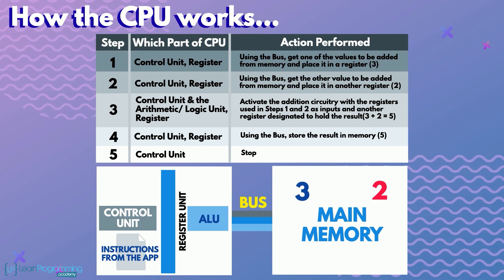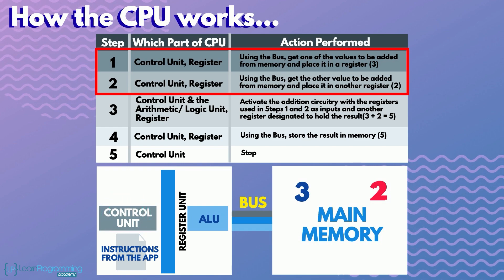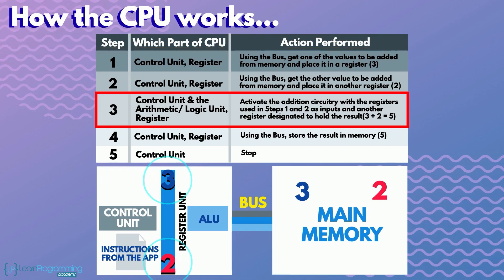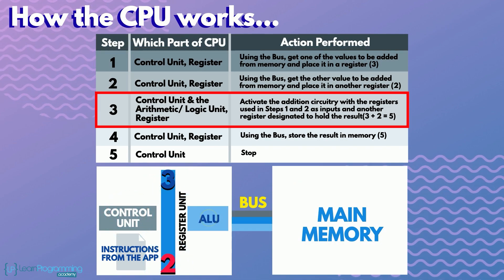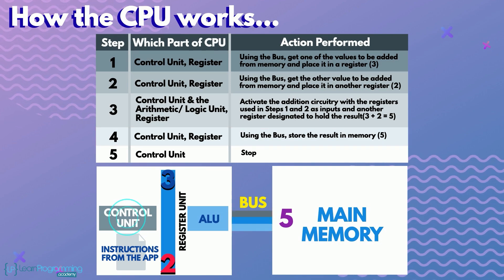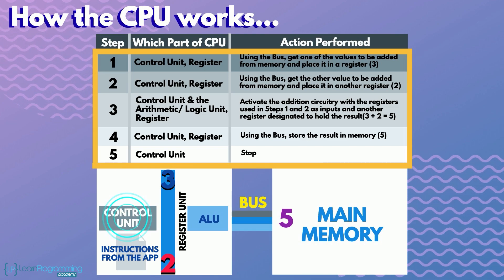Referring to the table, the sequence for performing this addition operation starts with the CPU's control unit transferring a copy of the data from memory via a bus — a collection of wires joining the CPU to main memory — and temporarily storing them into two registers, memory inside the CPU. The control unit then activates the circuitry for the arithmetic logic unit to do the addition, placing the result of 5 into another register. Then the control unit places a copy of the result back into main memory via the bus. The control unit must do all these steps in perfect sequence and timing.